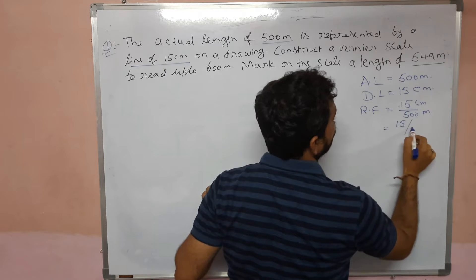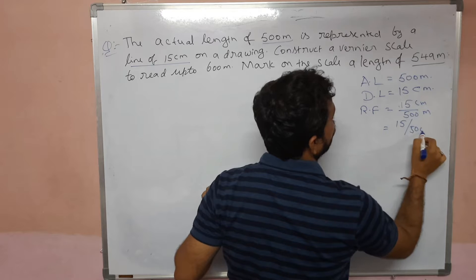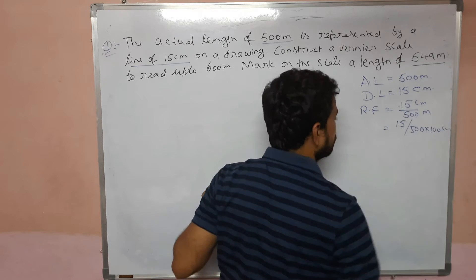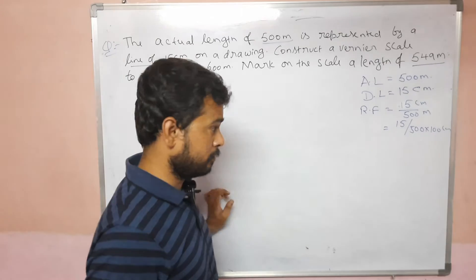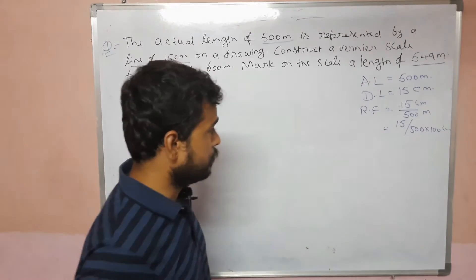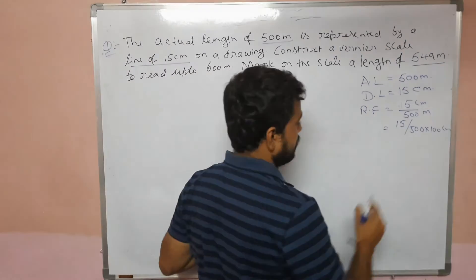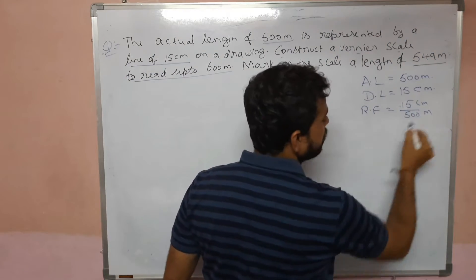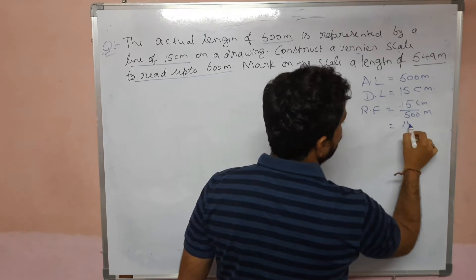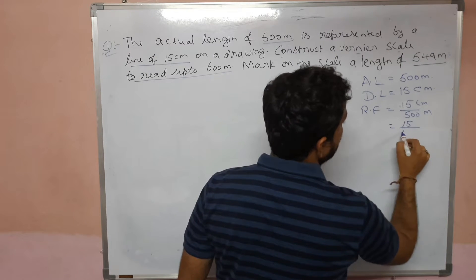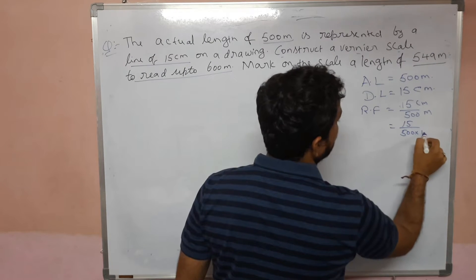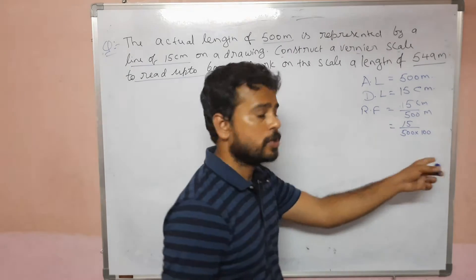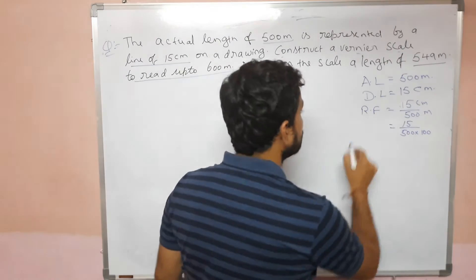So what do I do? 500 into 100 centimeters. The representative factor is 15 centimeters by 500 meters. So 15 divided by 500 multiplied by 100. It will be compared to centimeters.